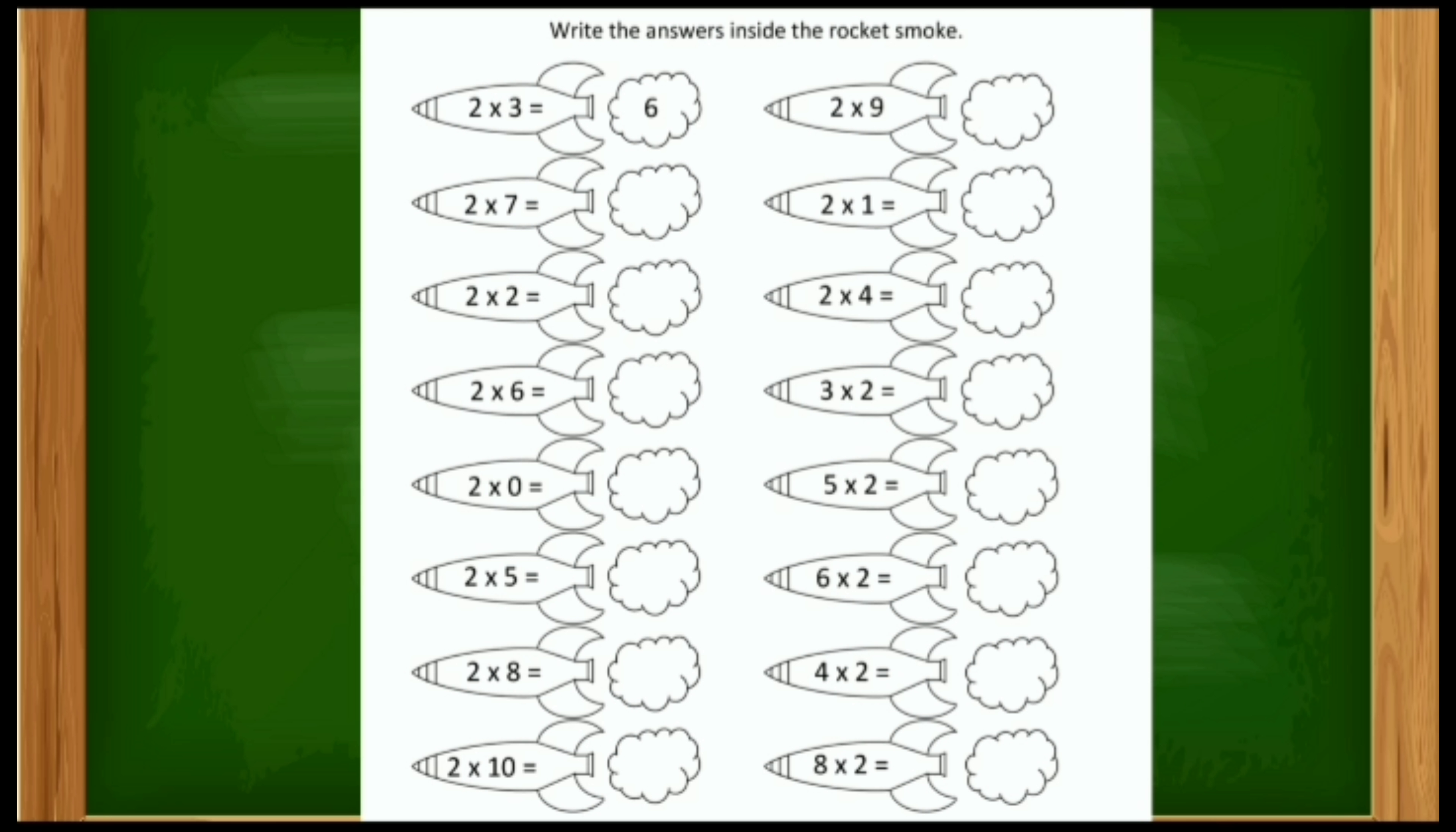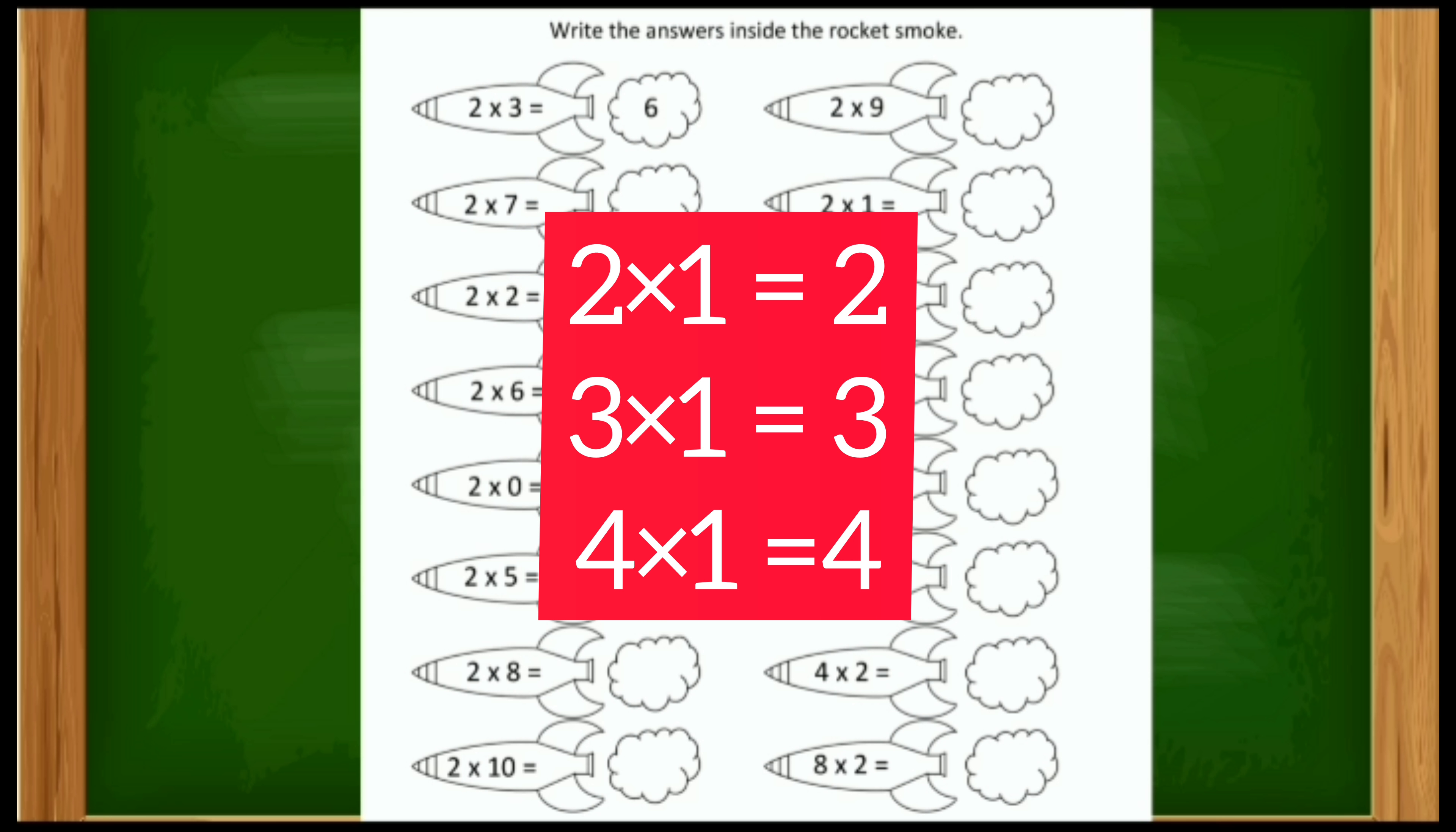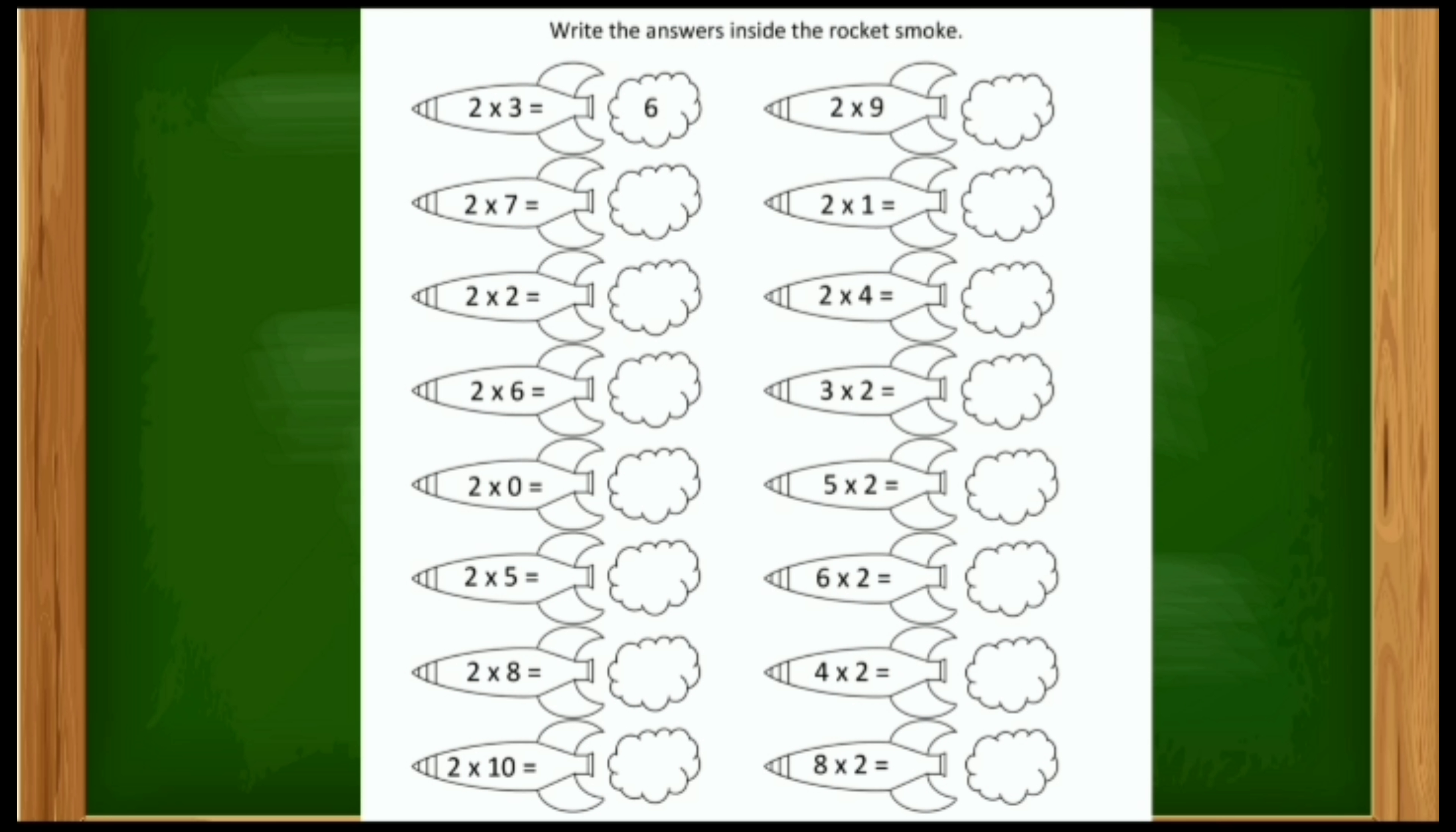When we multiply any number with one, we are getting the same number like two ones are two, three ones are three, four ones are four. So remember these things? Okay!